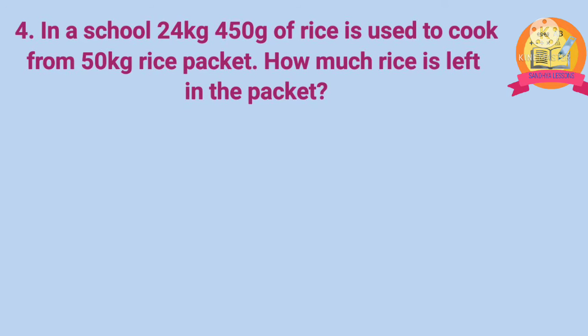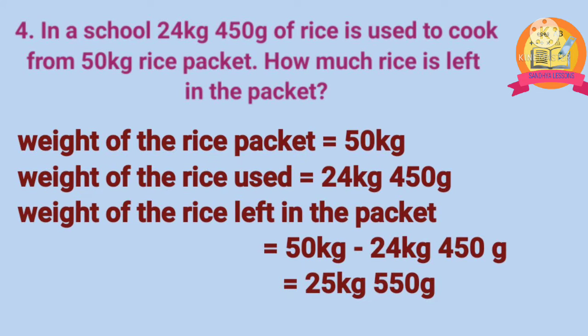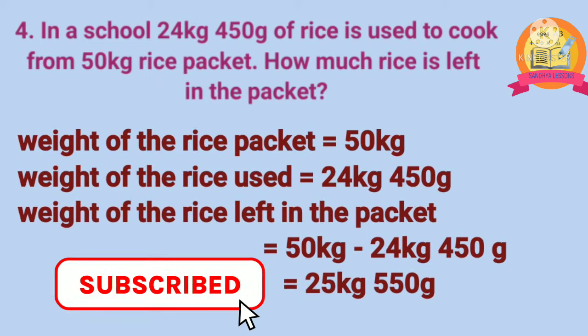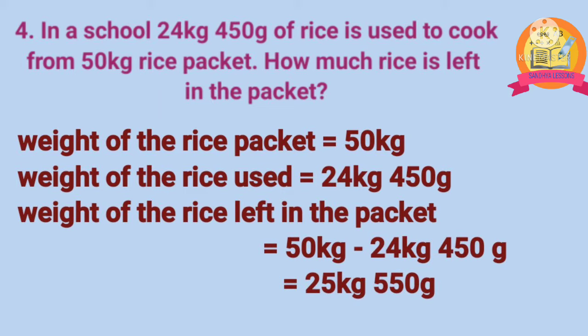Fourth problem: in a school, 24 kg 450 g of rice is used to cook from a 50 kg rice packet. How much rice is left in the packet? Solution: weight of the rice packet is 50 kg. Weight of rice used is 24 kg 450 g. Weight of rice left is obtained by subtracting: 50 kg minus 24 kg 450 g. After subtraction, we get 25 kg 550 g. Therefore, weight of rice left in the packet is equal to 25 kg 550 g.